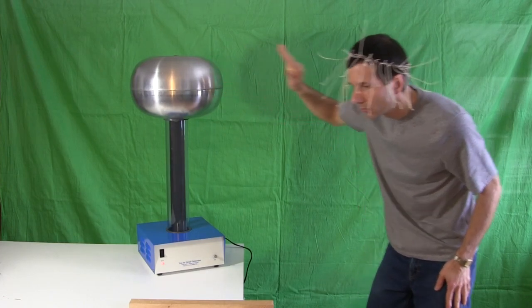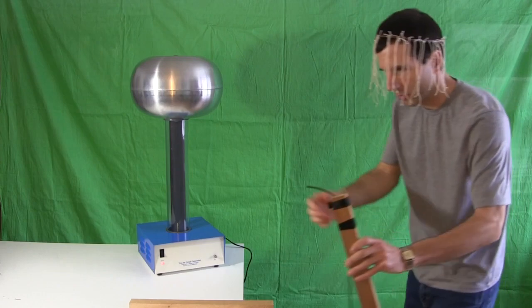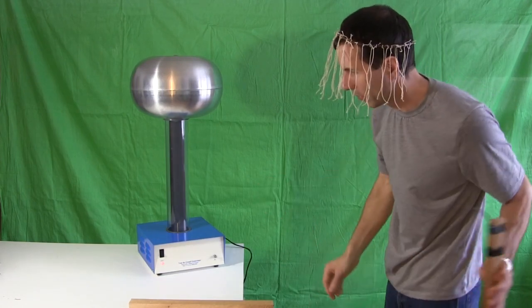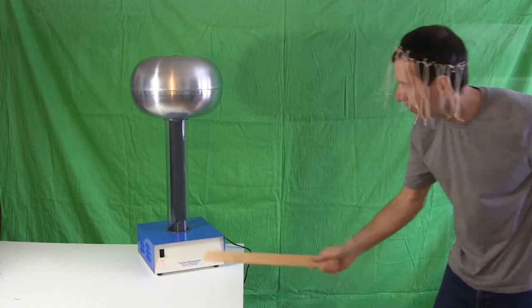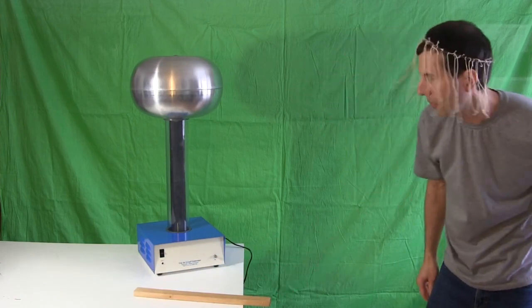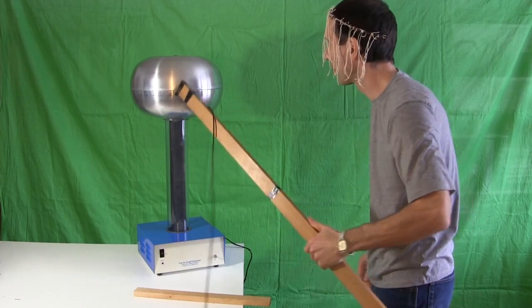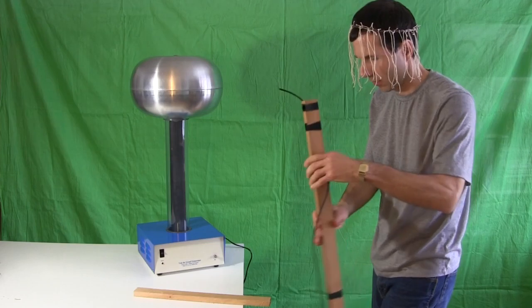When done you can remove your hand as long as you're still insulated from the ground. I discharge myself by touching a wire connected to the ground getting a small shock. I then turn the Van de Graaff generator off still keeping myself away from it in case of a shock. Then I bring the end of the ground wire near the dome and touch it. It's now safe.